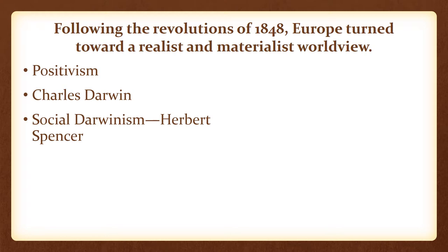Herbert Spencer popularized the idea of social Darwinism, which takes Darwin's ideas and applies them to humans and to society. As discussed earlier, this justified the European conquest of Africa and Asia during the age of imperialism. It also legitimized racism, making it more acceptable — the idea that European civilizations were superior.